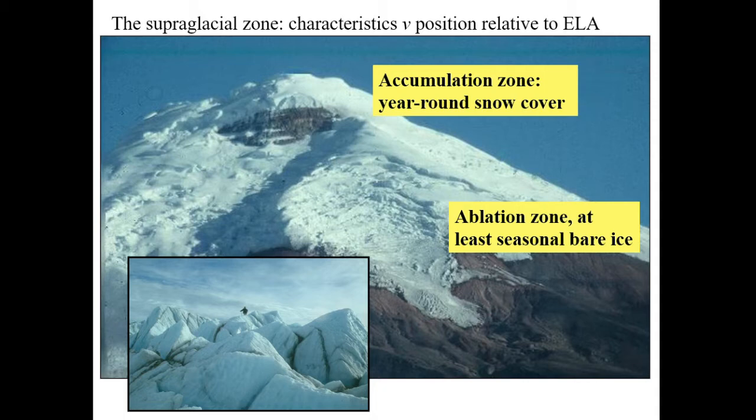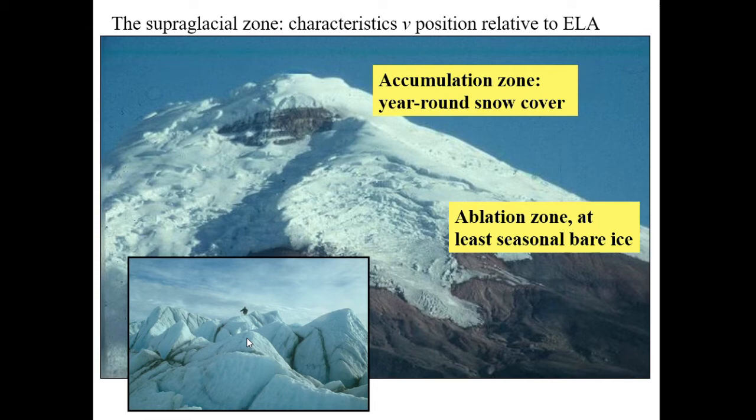In other words, are you in the accumulation zone or are you in the ablation zone? If you're in the ablation zone for at least part of the year, there's going to be a season with bare ice at the surface — the snow will have melted off in the summer. Here in the lower part of the ice cap you can see bare ice, and in the photograph on the left, from Greenland, you can see the surface of the ice sheet in the ablation zone in summer where all the snow that fell the previous winter has melted away, revealing the ice beneath, which is now melting away.